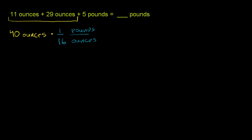If you multiply these two quantities, the ounces cancel out. When you multiply it out, you're left with 40 divided by 16. It's 40 times 1 over 16, but the 1 doesn't change anything, so it's 40 over 16 pounds.